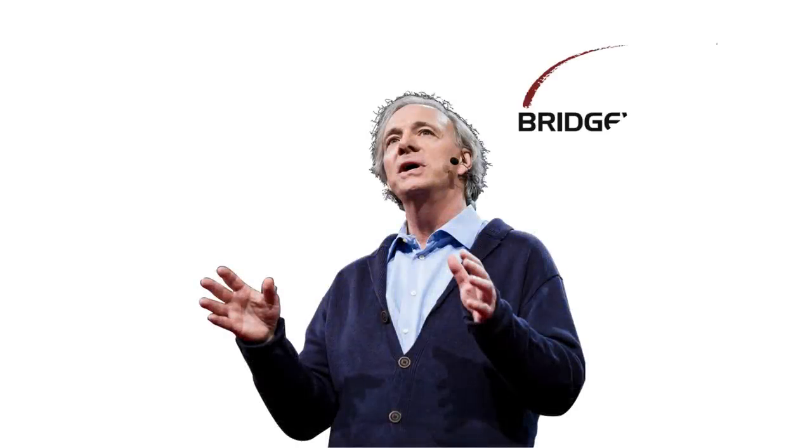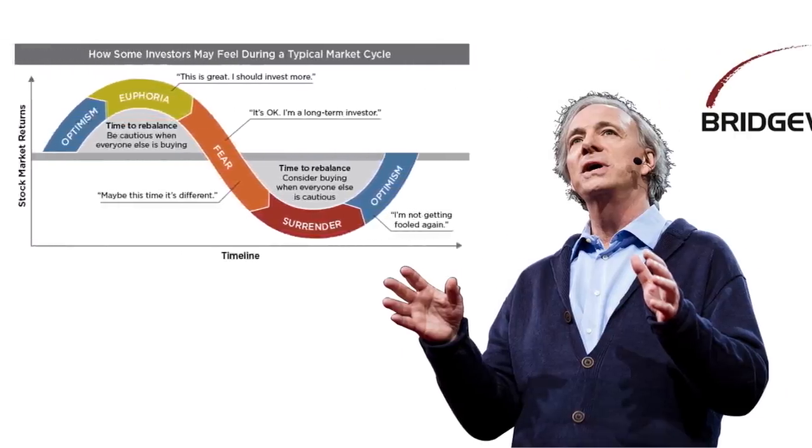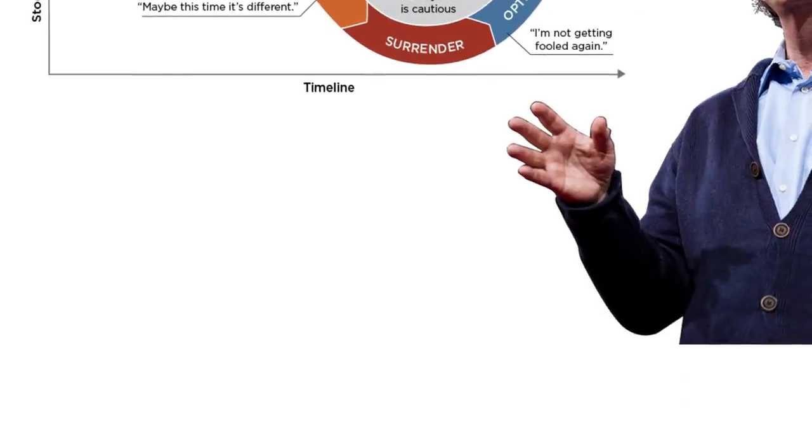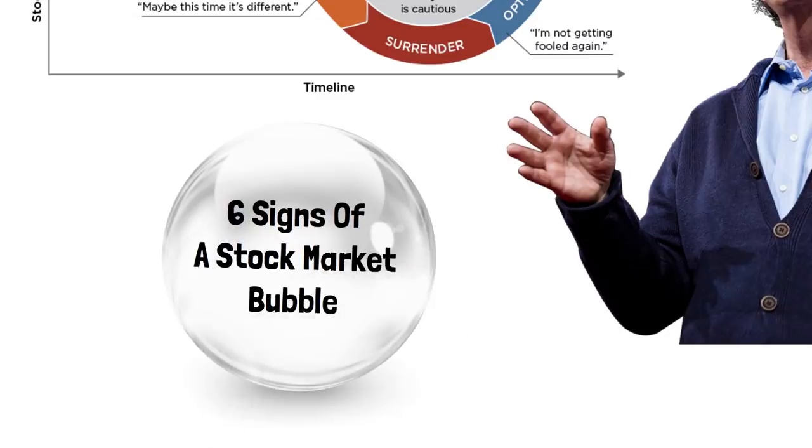Ray Dalio is an investor who runs the largest hedge fund in the world called Bridgewater. One of his specialties is looking at market cycles. Are markets poised to crash? Are they poised to go up? What are the patterns that we can see? In this video we go over Dalio's six signals that he uses to determine if the stock market is in a bubble. But he's not just looking at bubbles, he's looking in particular for bubbles that are about to pop and crash the market.